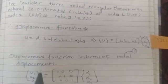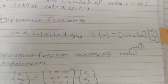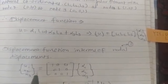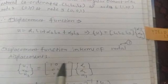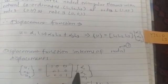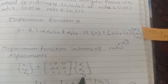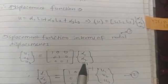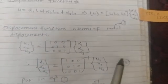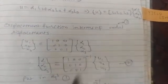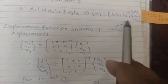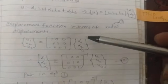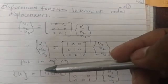In the second part, we write the displacement function at the nodes. We get {u1, u2, u3} equal to the identity matrix multiplied by {α1, α2, α3}. We then find the values of α1, α2, α3 from this equation and substitute these values back into equation number one.